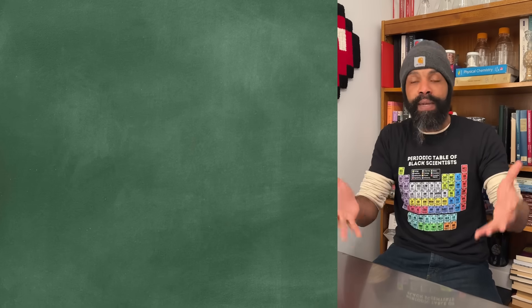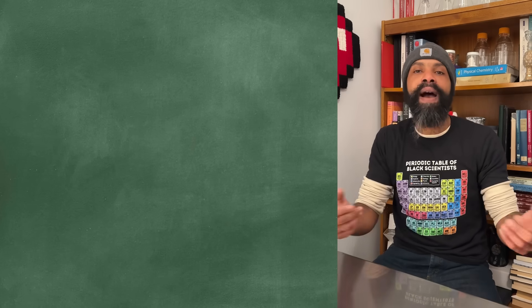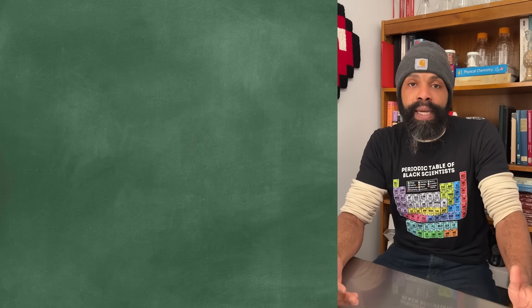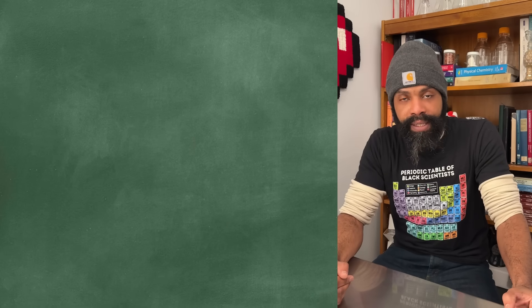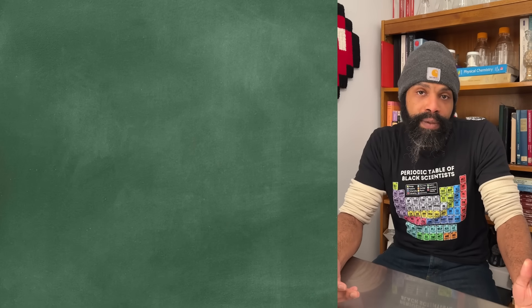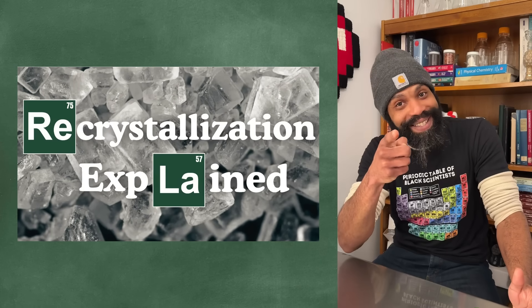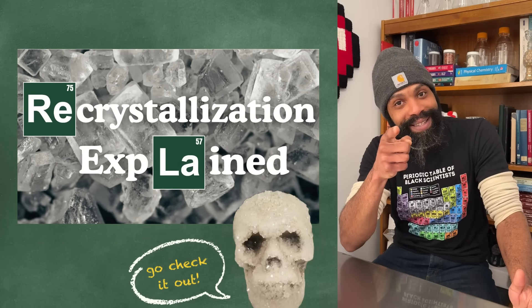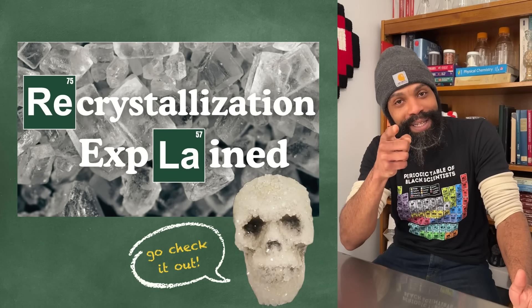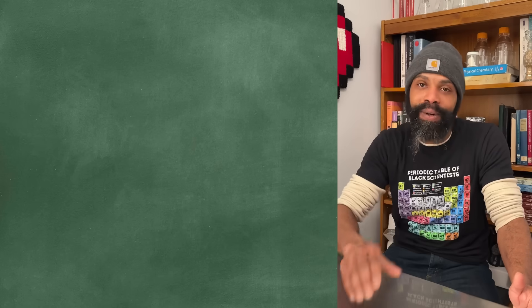So now how do you get the citric acid out? There are a couple ways. Usually they recrystallize the citric acid out. And if you want to know about recrystallization, you should check out my video on recrystallization, specifically the one about the borax skull. I did a good job on that video. It's a very good explanation.